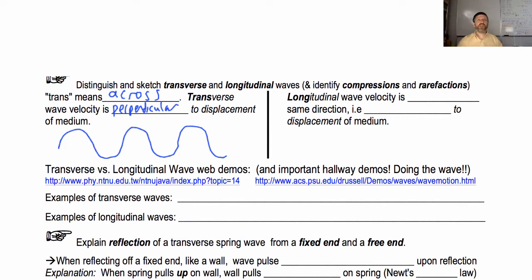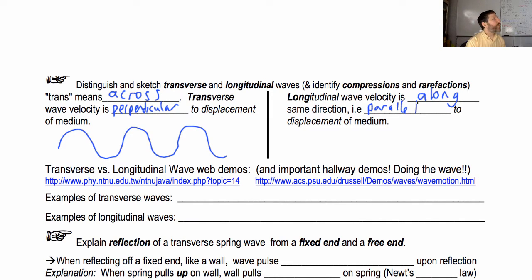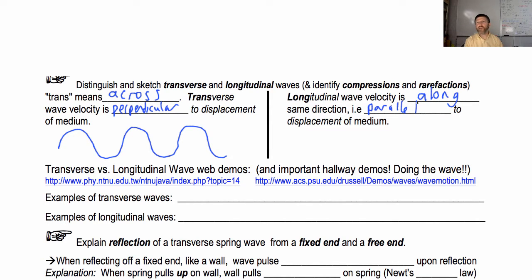Here's the mnemonic for longitudinal wave velocity: it is along the same direction, parallel to the displacement. So the wave velocity is parallel to the wave displacement. 'Longitudinal' — along the same direction — means the wave velocity is parallel to displacement.